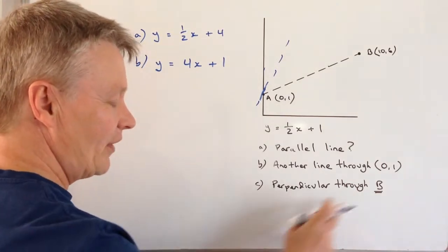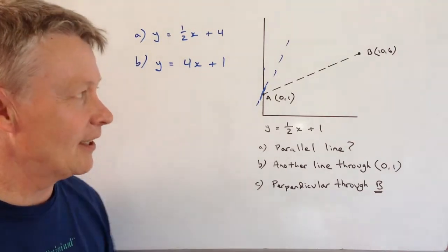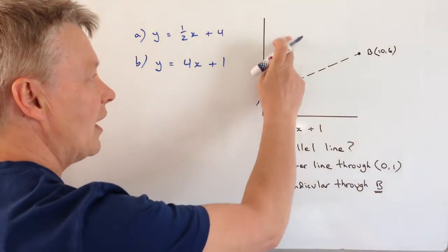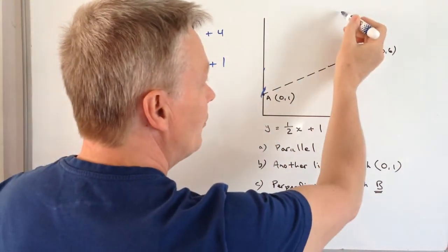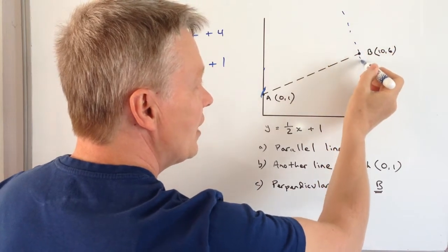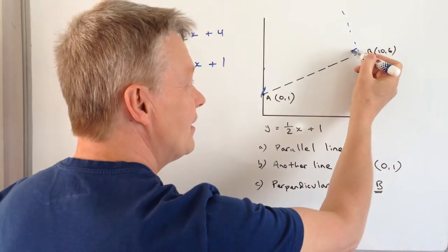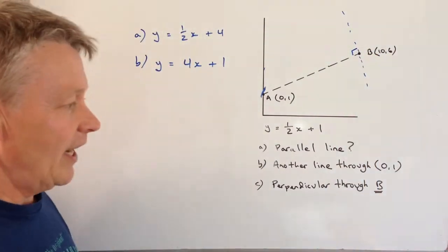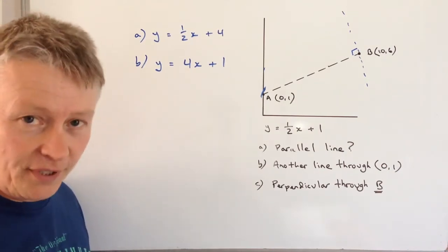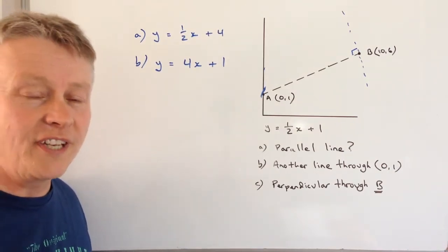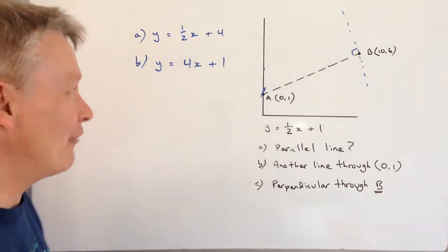The other part of it which is the bit people get a little bit stuck on is the perpendicular line through b and what they're basically saying is that rather than a line like that you've actually got another line which is perpendicular. What we mean by perpendicular is it's at 90 degrees. Well the thing that you need to remember with that is the gradient of a perpendicular line is something called the negative reciprocal.